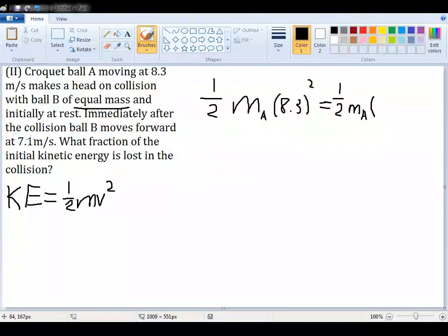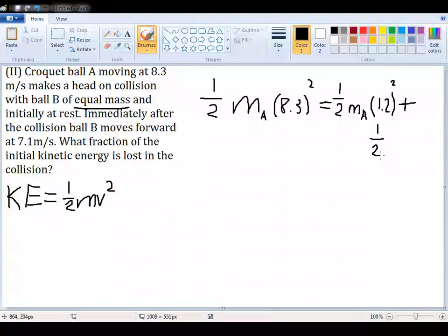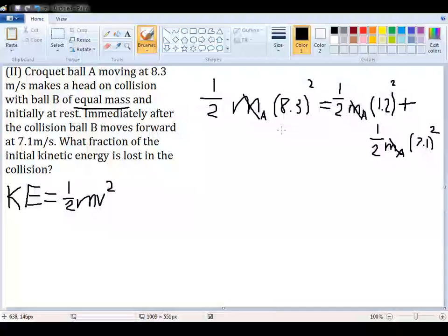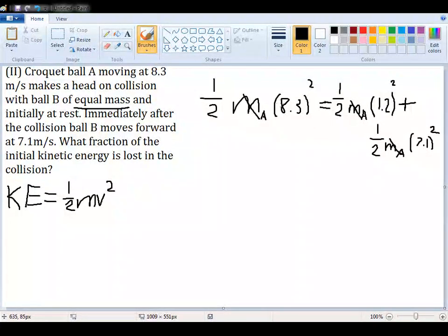Which in this case, 8.3 minus 7.1, that's just 1.2. So 1.2² is our new velocity of the second ball, while the kinetic energy of the ball B is going to be 1/2 M, and since we know that mA equals mB, since we're of equal mass, I'm just going to say mA to make things a little easier to read, times 7.1² for final velocity. And since we just have 3 mA's here, we can just cross them all out, and thus we're left with what we have now.